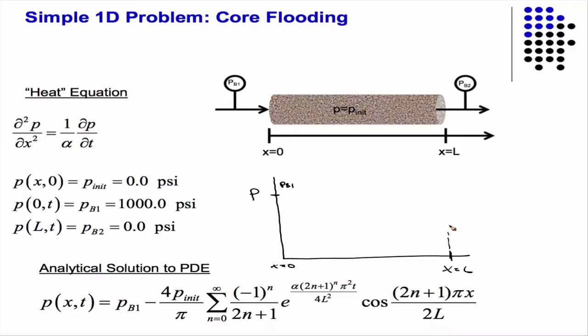And on this side, at x equal to L, PB1 is the pressure. And in this specific example, it's a thousand psi, but that doesn't really matter, right?